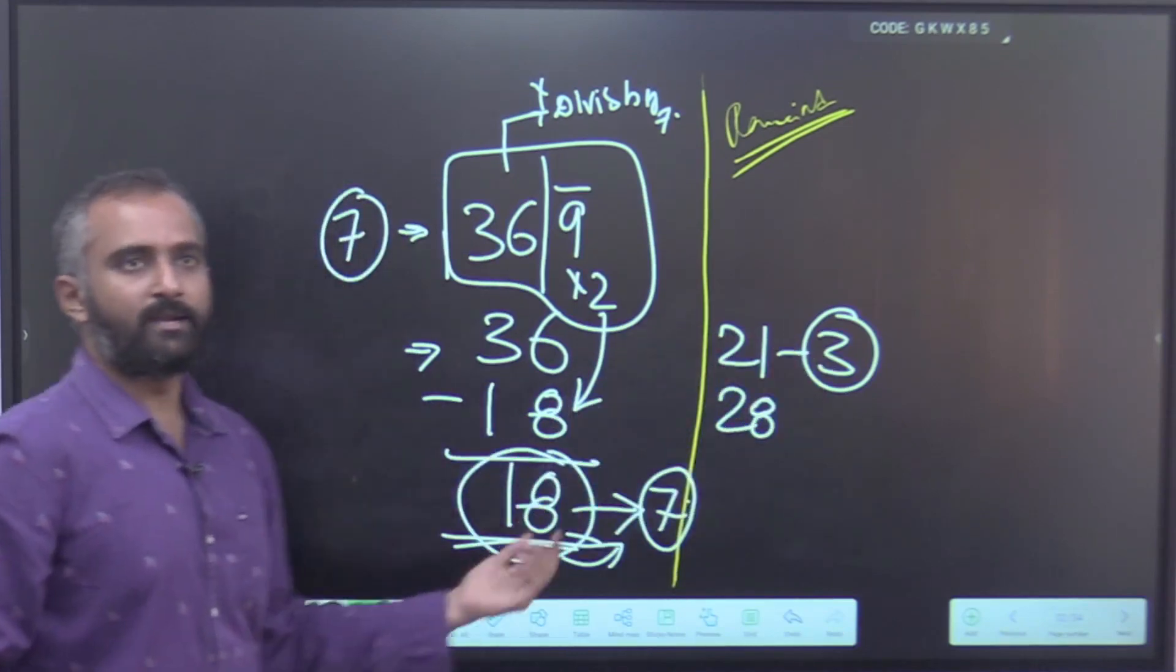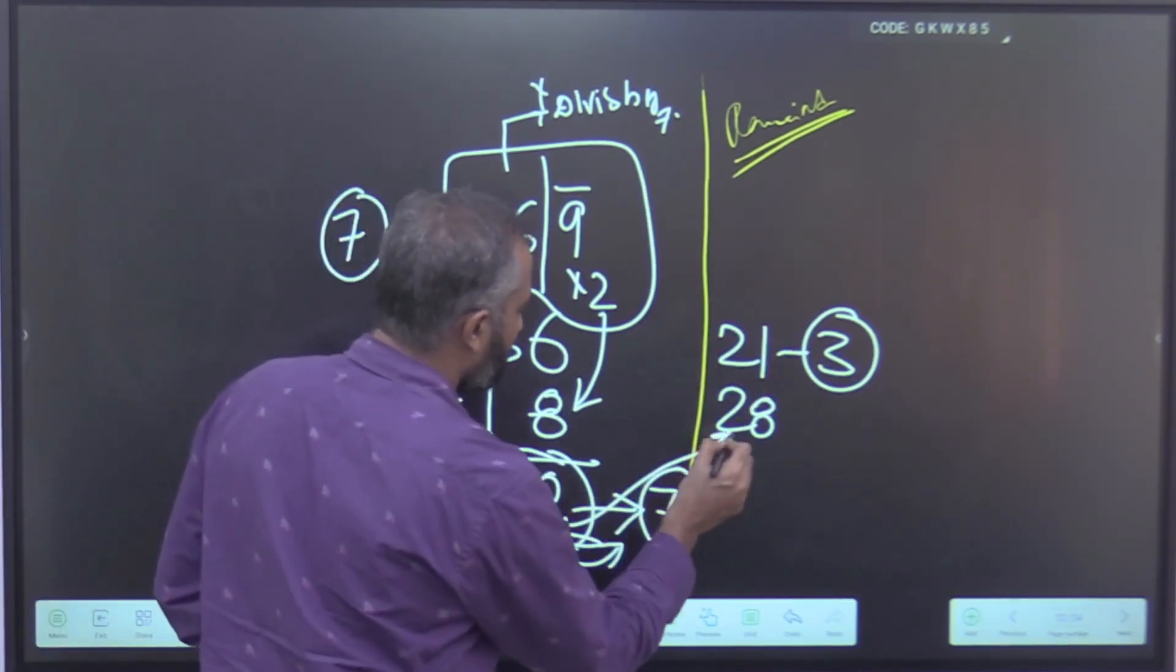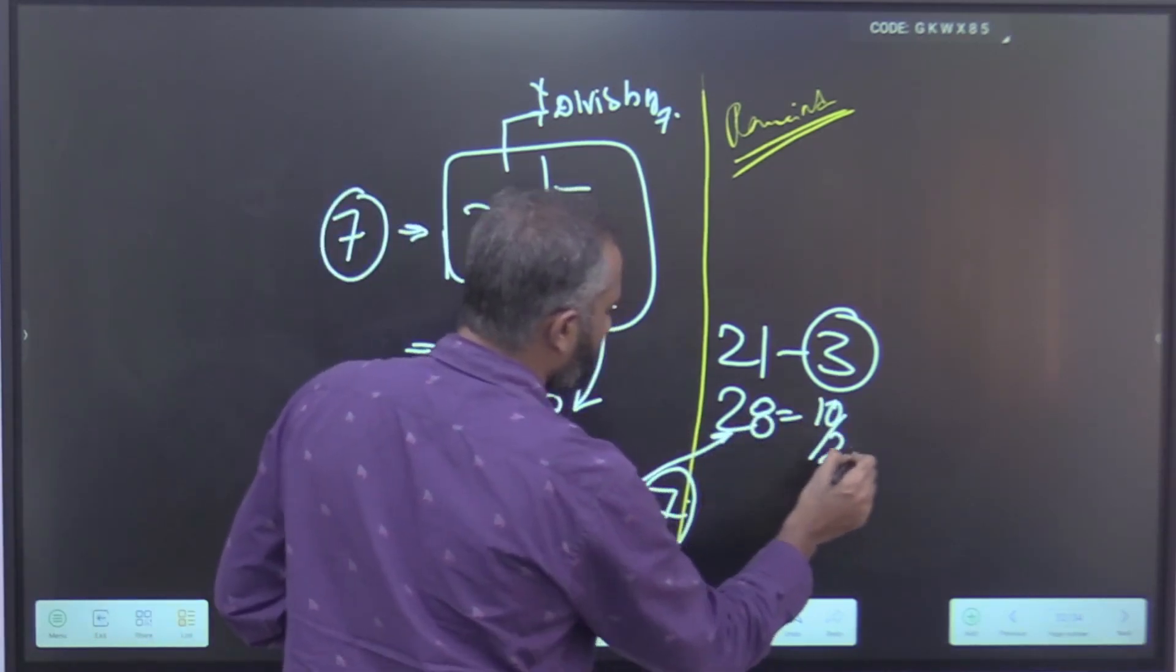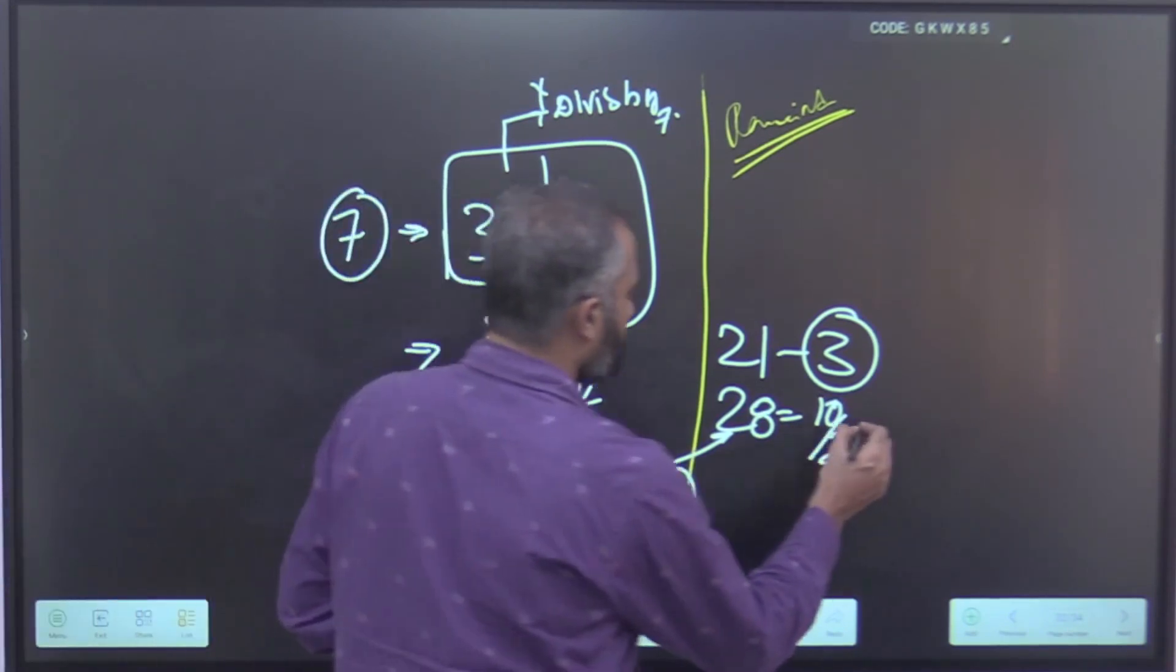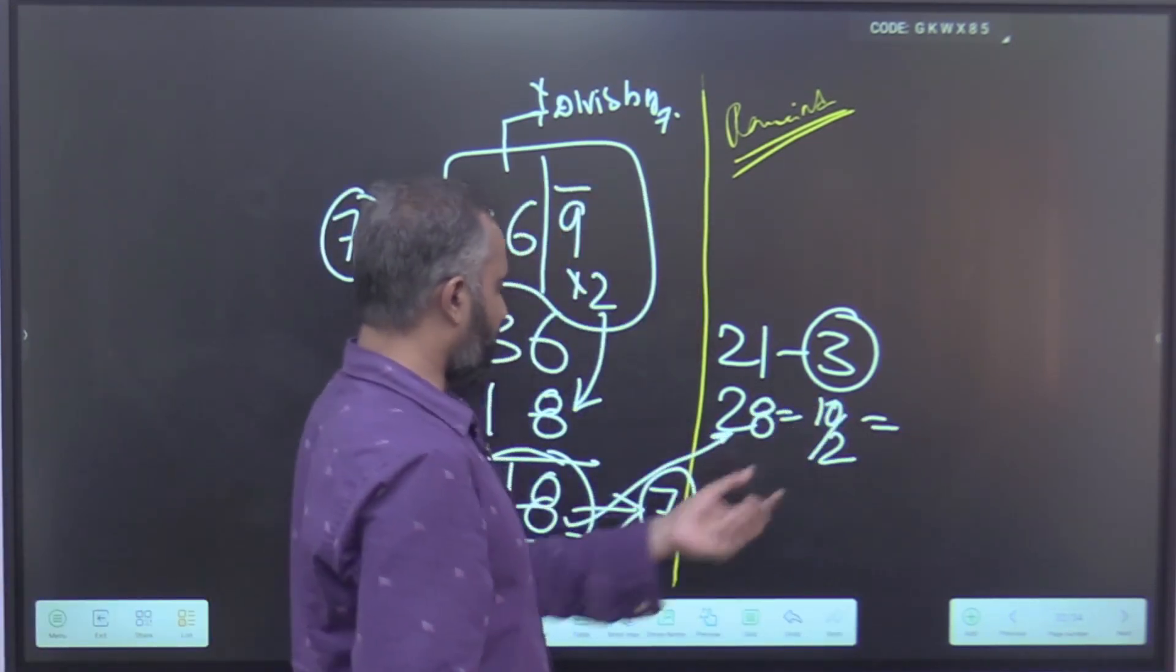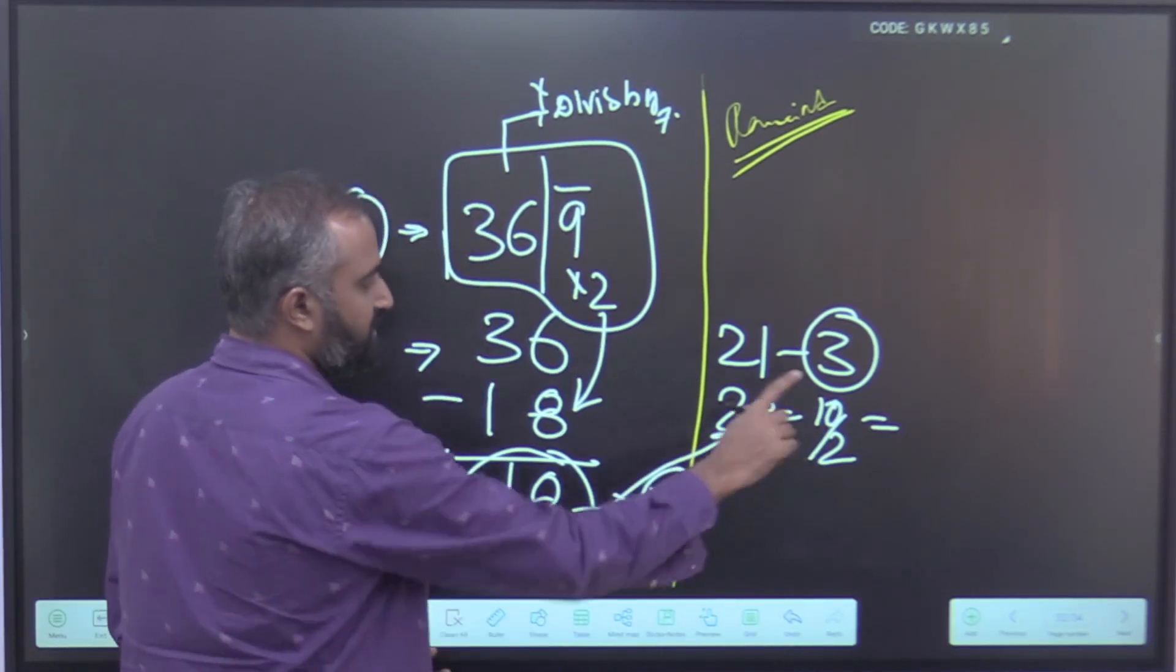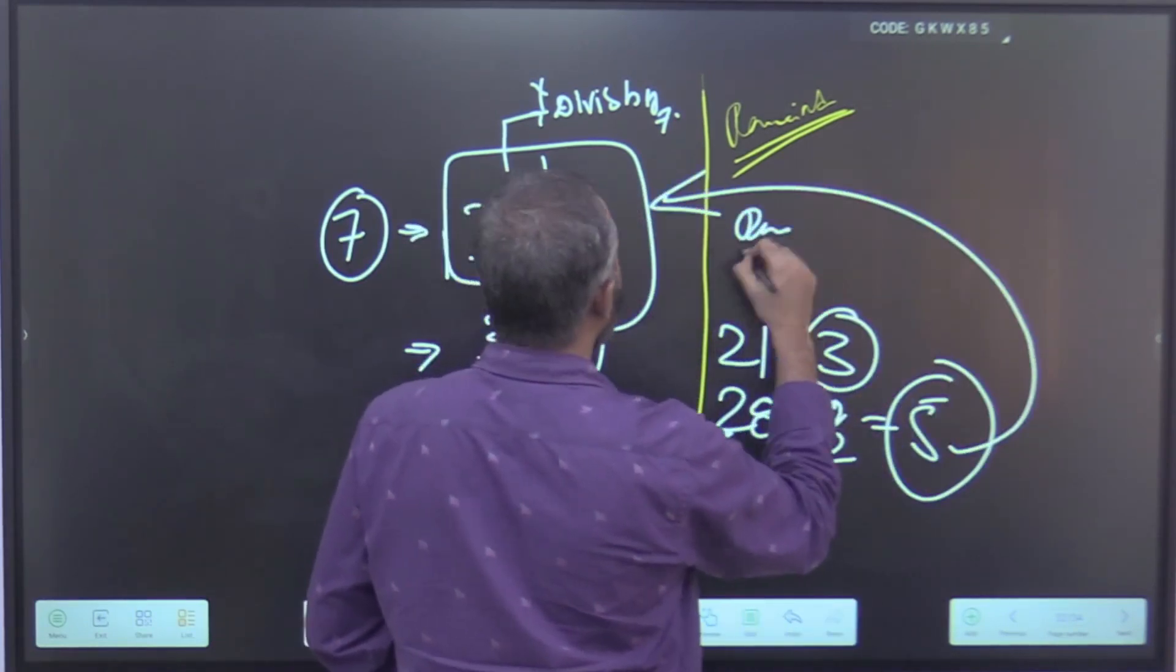So this is not divisible by 2. Now consider the next multiple: 18 and 28, the difference is 10, which is divisible by 2. So your remainder will be half of this difference. For example, 28 minus 18 which is 10, half of this difference is 5. So this will be your remainder.